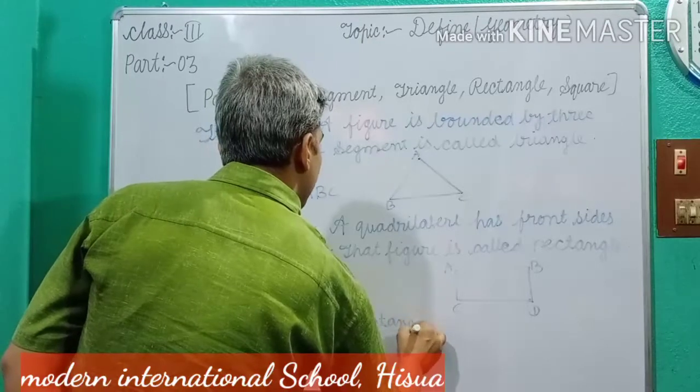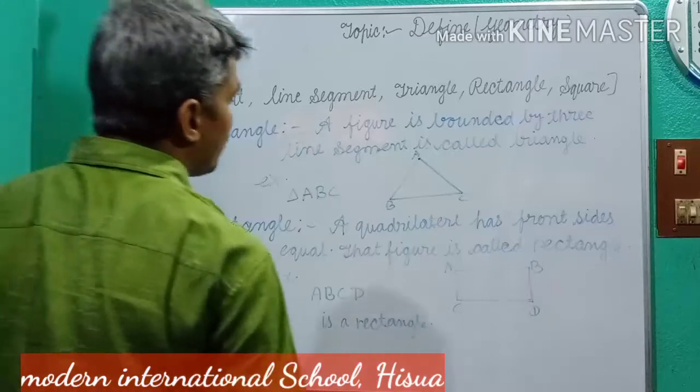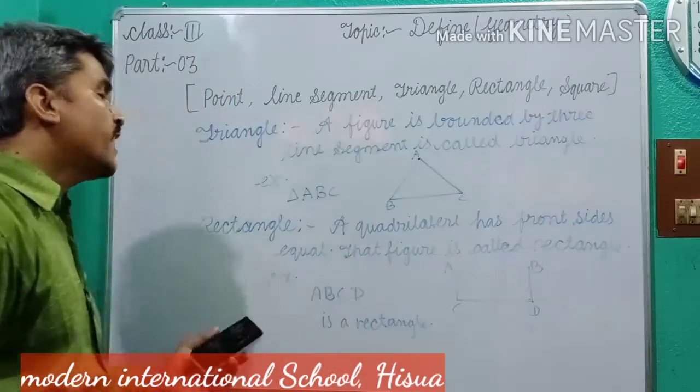In previous video, we talked about how many vertices, how many sides, how many angles and each angle is 90 degrees.